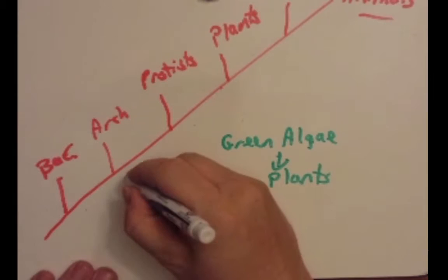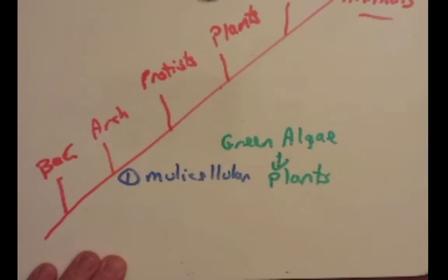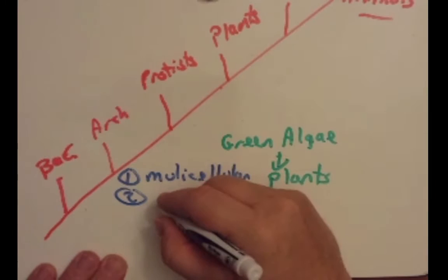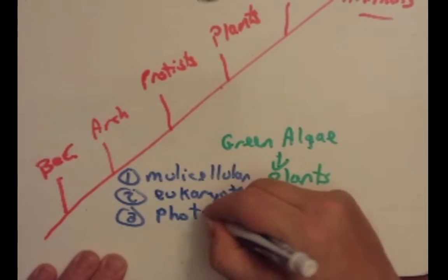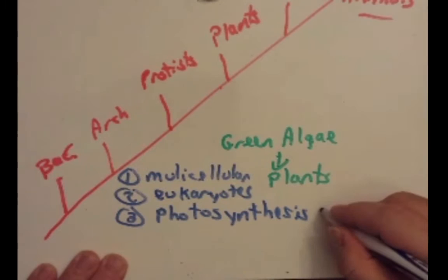They're multicellular. They're eukaryotic. So these are kind of general ones that we are going to find true as we move forward here. Both the green algae and plants undergo photosynthesis. We haven't talked about this yet, but we will. And thus they each have chloroplasts because of that.